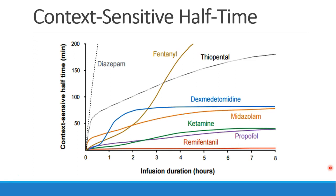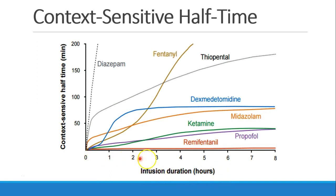This is a graph that demonstrates context-sensitive halftime — you should be able to create a graph like this on an exam. On the x-axis is the duration of an infusion in time — how long did an infusion run? On the y-axis is the context-sensitive halftime, which is how long it will take for plasma levels to drop by 50% when you stop the infusion.